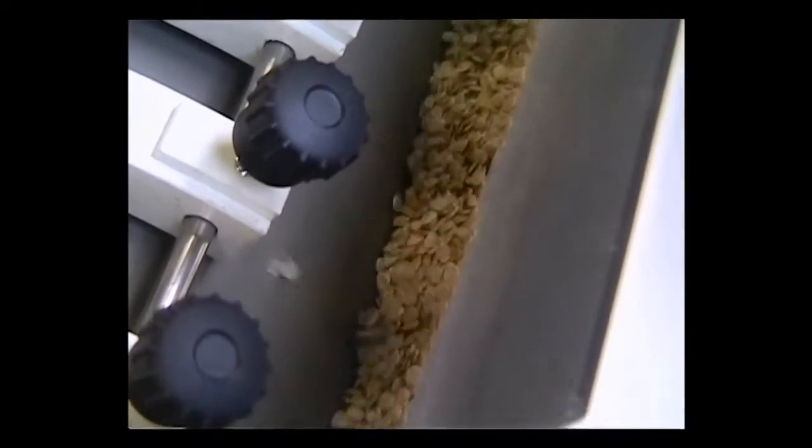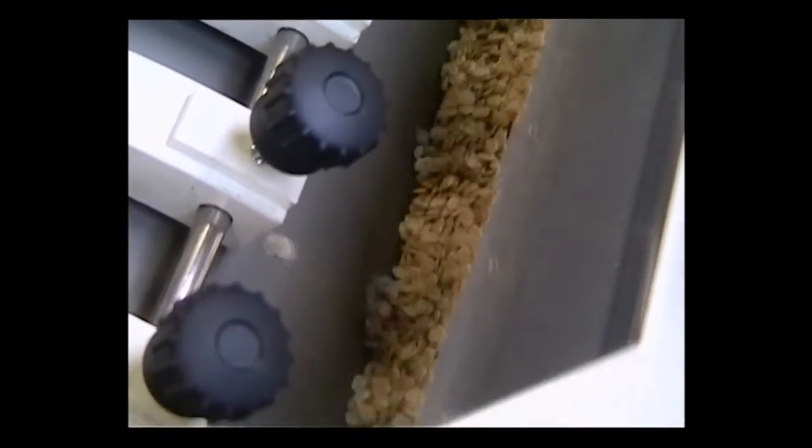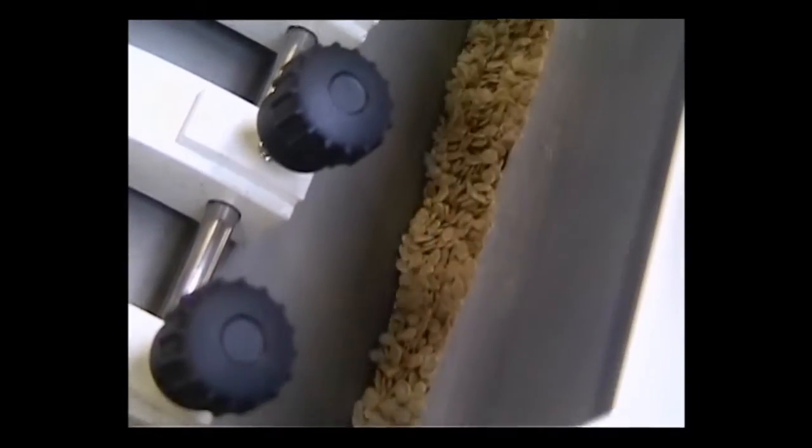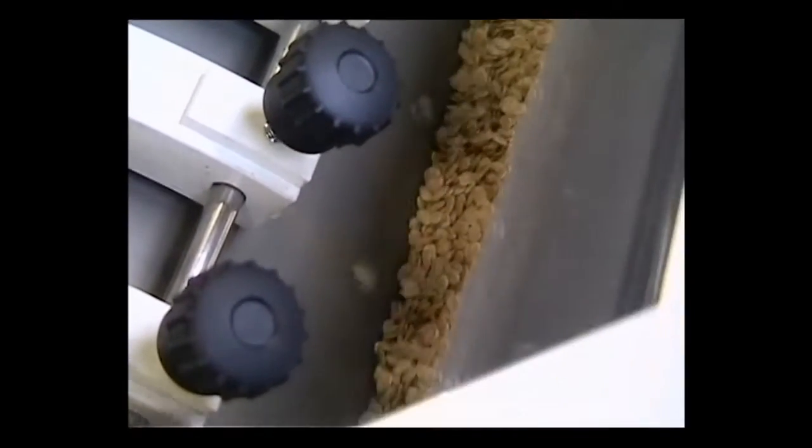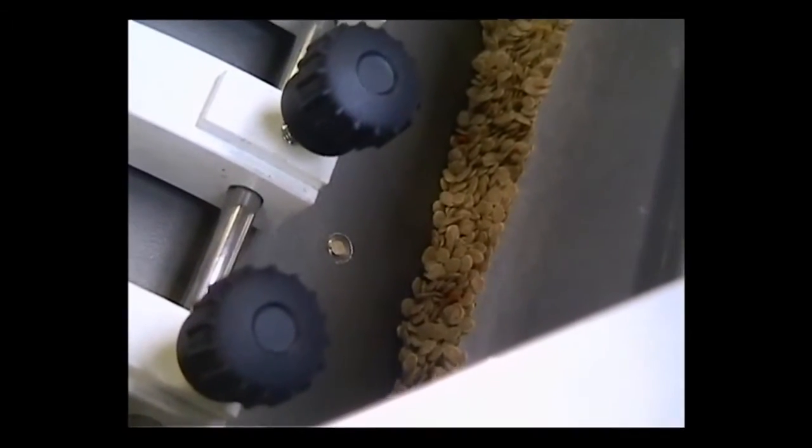The seed hopper moves from side to side to agitate the seed and thus present the seed in the best way to the nozzle as it passes through the seed hopper. The result here is that you get the best percentage singles.